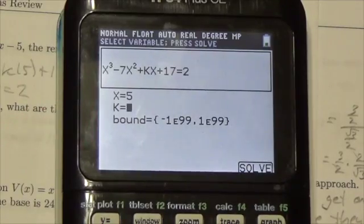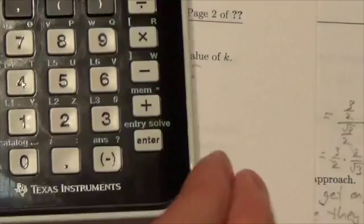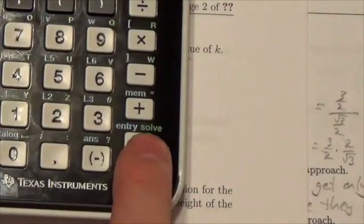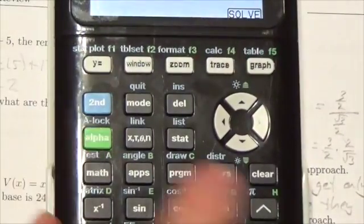I don't know what k is. I'm going to solve for k. Now, if you look just above your enter button, there's the word solve. Now, it's in green, that's because I have to press alpha and solve.